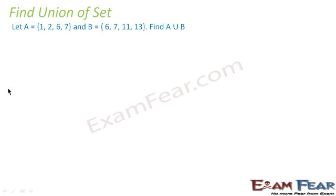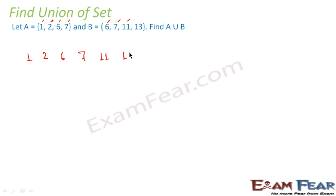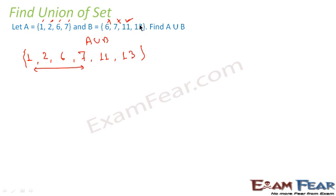Let's take another example. Set A = {1, 2, 6, 7} and set B = {6, 7, 11, 13}. For A union B, we first write all elements of A: 1, 2, 6, 7. Then from B: 6 is already there so ignore it, 7 is already there so ignore it, 11 is not there so we write it, and 13 is not there so we write it.